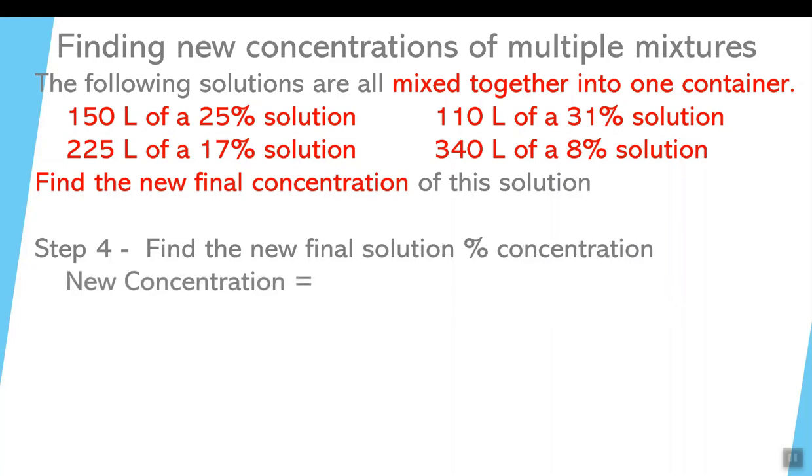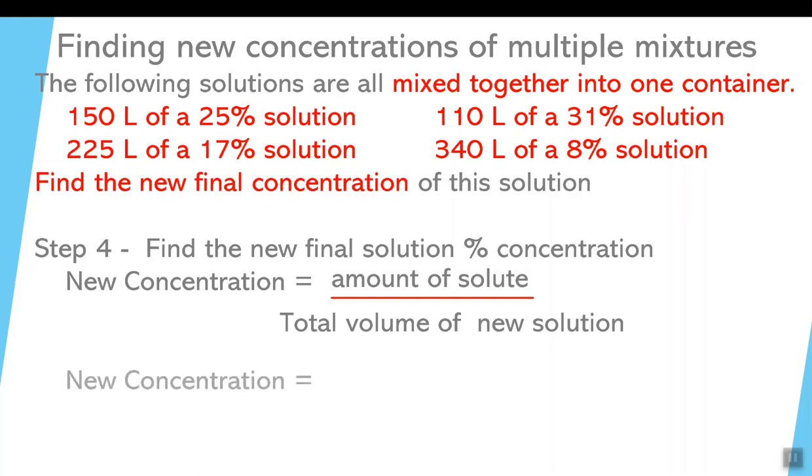Step four, now we have to find what our new concentration is. And the formula for a new concentration is the amount of solute divided by the total volume of the new solution, or all the solution volumes added together. Now when we take a look at our next step, we find that the new concentration is equal to the answer that we found previously, 137.05 grams, divided by the next answer that we found, 825 liters.